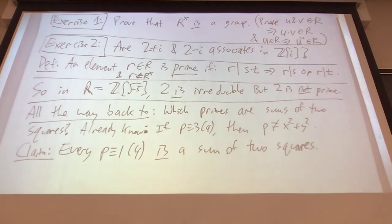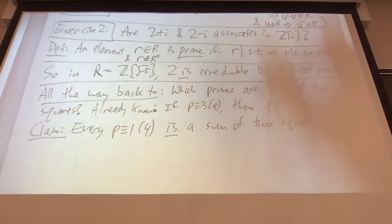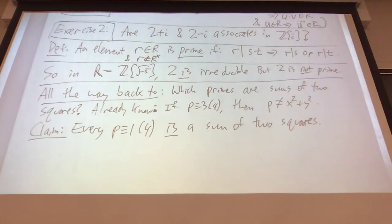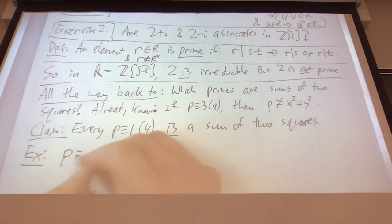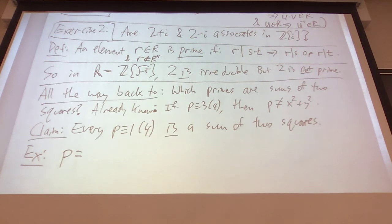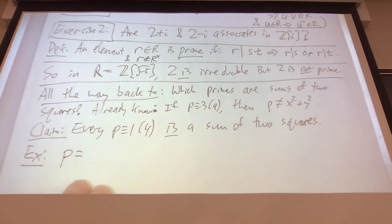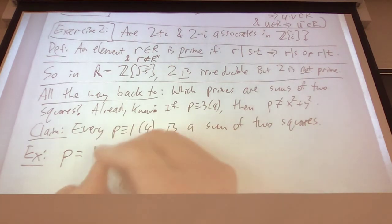My claim is that every prime congruent to 1 mod 4 is a sum of two squares. Not only that, but there's an efficient algorithm for finding its representation. Let's do it by example. Somebody give me a prime that's 1 mod 4. 17. Perfect — 17 is a little too easy because it's 16 + 1, but it'll work.